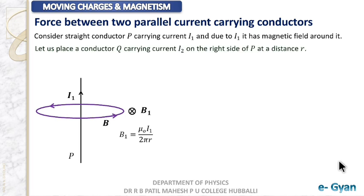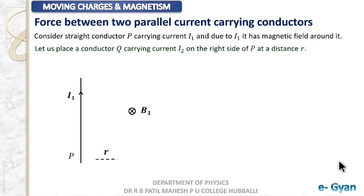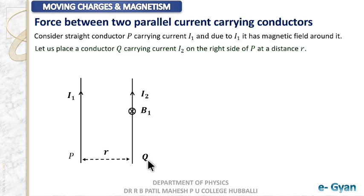Our intention is to place one more conductor to get two parallel conductors. So I will place conductor Q at a distance R from P. From this we know there is a magnetic field B1 due to conductor P, and in that magnetic field we are placing conductor Q. For conductor Q, B1 will be the external magnetic field. So in the presence of this external magnetic field, conductor Q will experience a certain force.